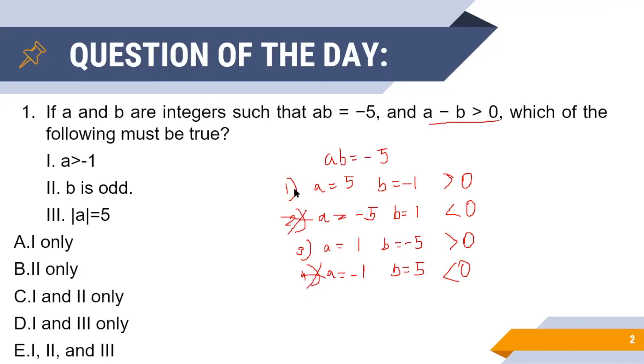Then we are left with cases one and three as the possible solutions for these two conditions. Now we observe that in both case one and case three, a is greater than minus one, and hence we can safely conclude that option one is always true. Next, in both case one and three, we see that b is always odd, and hence option two is true as well.